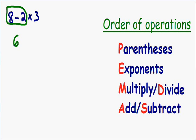Now that we subtracted, we can't forget that we are multiplying by 3 on the right side of the expression. So we have 6 multiplied by 3, and we know that 6 times 3 is equal to 18. So we get a final answer for this problem of 18.